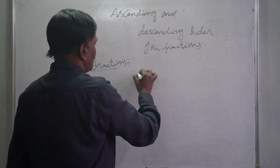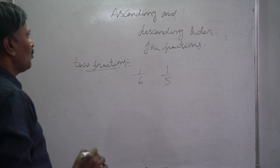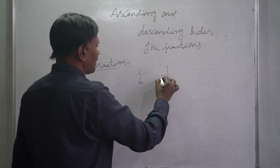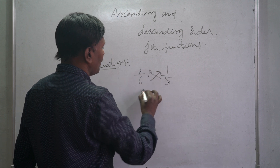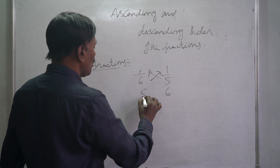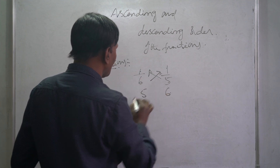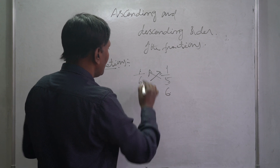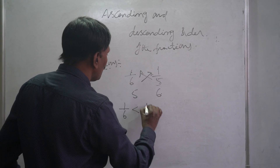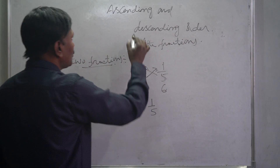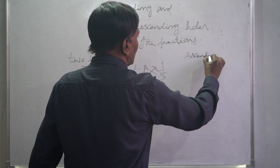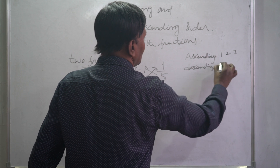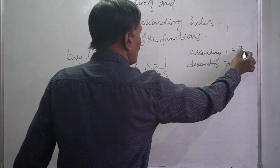First we look at two fractions: 1/6 and 1/5. To find the ascending and descending order, we need to find the bigger fraction using cross multiplication. 5 times 1 is 5, and 1 times 6 is 6. Since 5 is less than 6, it means 1/6 is less than 1/5. Remember, ascending means 1, 2, 3 (going up) and descending means 3, 2, 1 (going down).